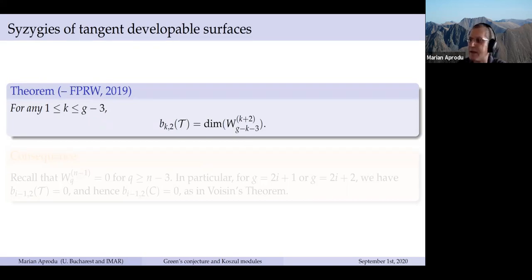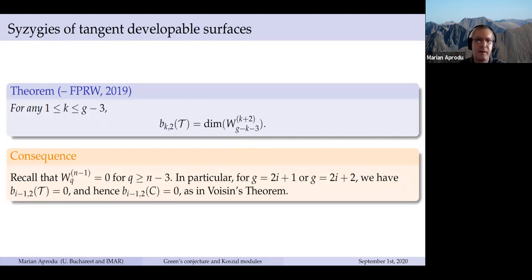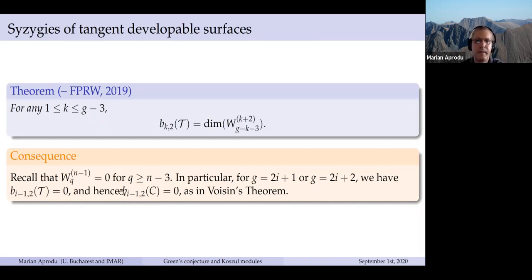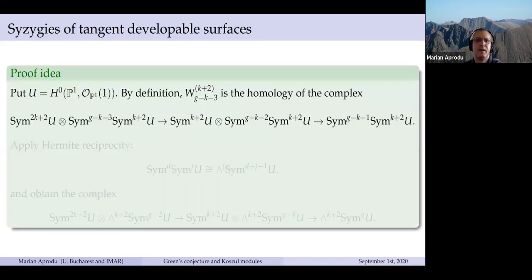This is obtained via a theorem which gives a relation between the graded Betti numbers of the tangent developable surface and the dimensions of the Weyman modules. Weyman modules are Koszul modules in the representation-theoretic setup. From the vanishing result at the beginning of the talk, we obtained the vanishing of the graded pieces of these Weyman modules starting from degree N minus three. So in particular, if g equals 2i+1 or 2i+2, we obtain exactly the vanishing predicted by Voisin.